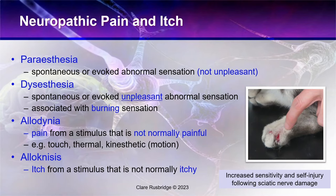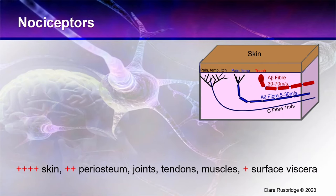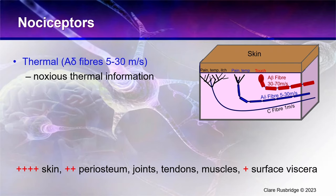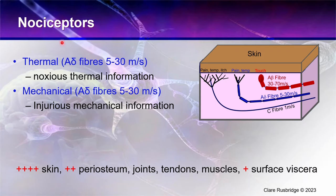Now, some anatomy of nociception and pain perception. It starts with the nociceptors, which are present in high quantities in the skin, periosteum (the covering of bones), joints, tendons, and muscle, and some in the viscera. The first fibers are the alpha-delta fibers, specialized for detecting noxious thermal or mechanical information. They travel at high speed — between 5 and 30 meters per second — and have a small surface area allowing precise localization of painful stimuli.